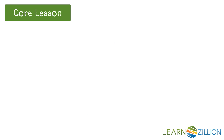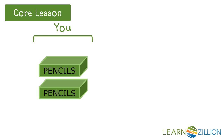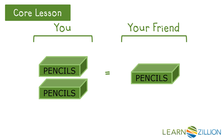Let's look at one final example. This time you have 2 pencil boxes, and your friend has 1. Again, we could represent this with an equation, but we're thinking how many pencils must be in each box for you and your friend to have the same amount. Here's our equation. So again, we could substitute values in to see what works.